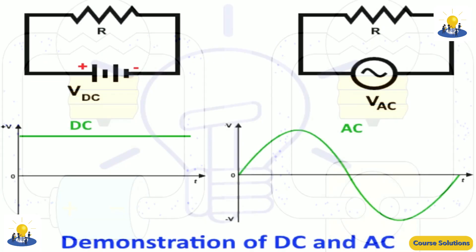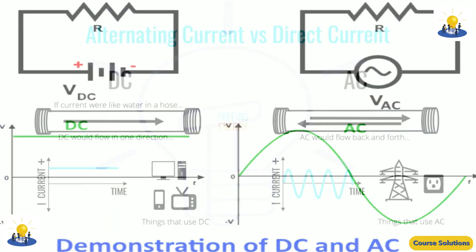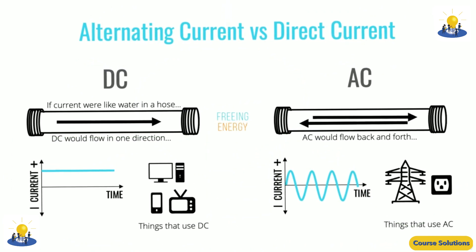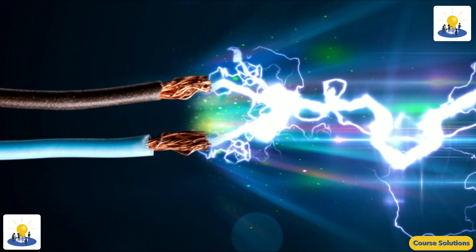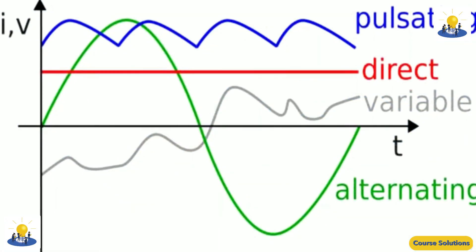Another common type of current is called alternating current, abbreviated AC. In an alternating current circuit, voltage periodically reverses itself. When the voltage reverses, so does the direction of the current flow.